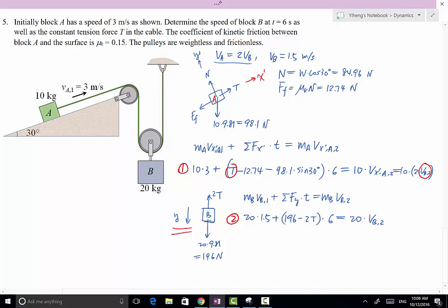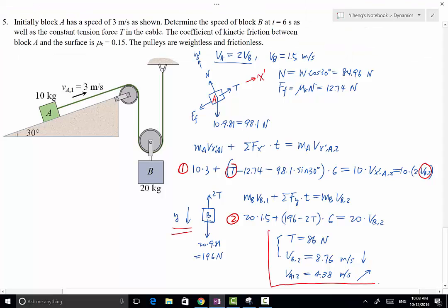And that's going to be T equals 86 newton, and VB2 equals 8.76 meters per second. From there you can solve for VA2, even though it's not asked for, but VA2 simply equals twice that, that is 17.52 meters per second. So VB2 is in this direction, VA2 is in this direction along the slope. You can try to solve the same problem using Newton's second law coupled with kinematics, and you should get the same answer.